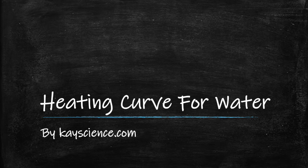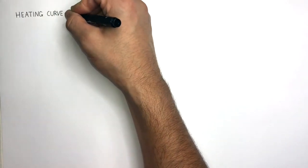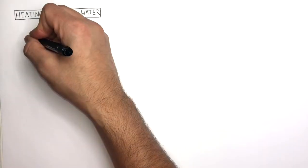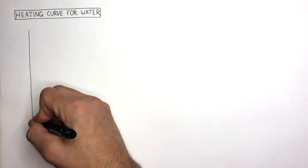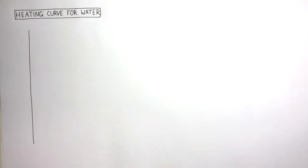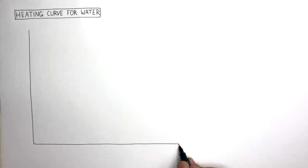This is a heating curve for water by KScience.com. We're going to understand what a heating curve for water is. This graph will explain how ice, water, and water vapor are heated and how the particles change as this takes place.